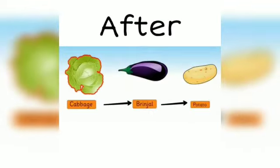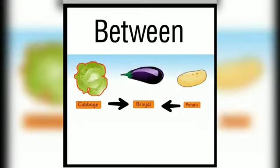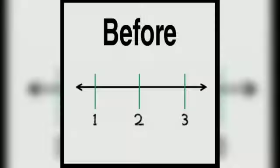Thus, brinjal is placed in between the cabbage and the potato. Now let's take another example. We have numbers one, two, and three.